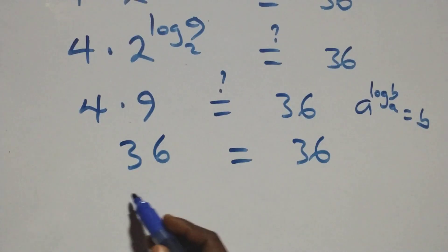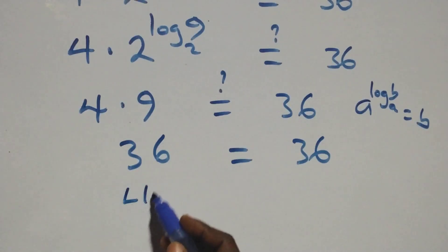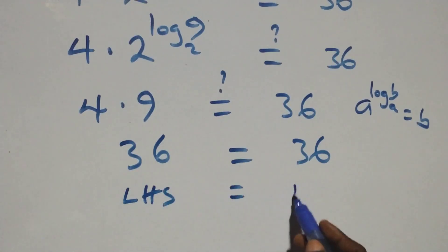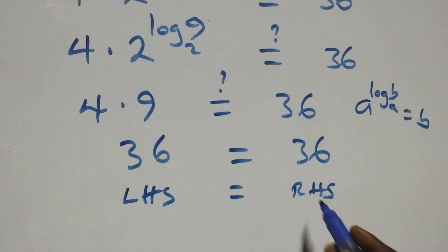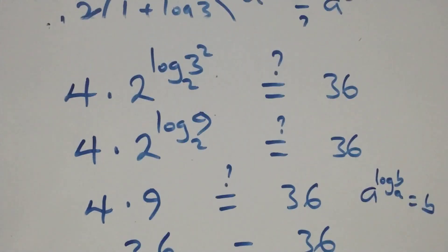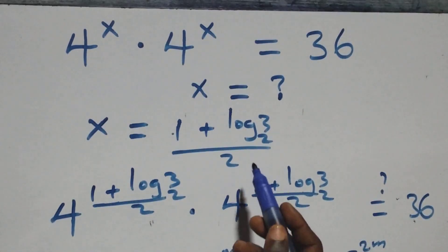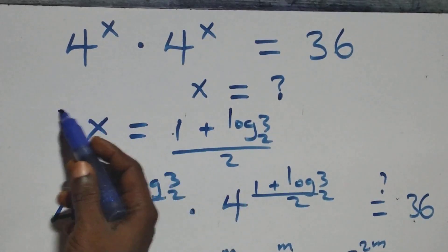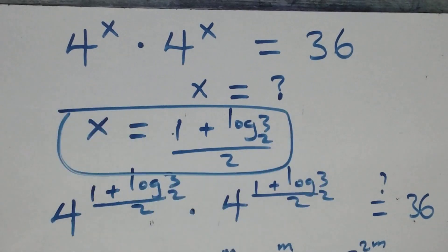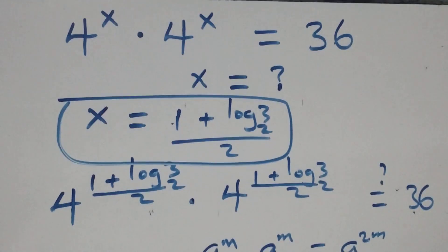Left hand side equals the right hand side. Therefore, we conclude that x equals to 1 plus log base 2 of 3, all over 2, satisfies this given problem. Thank you for watching. Subscribe for more videos and turn your notification bell on.